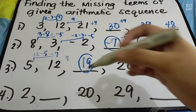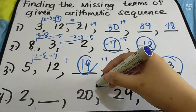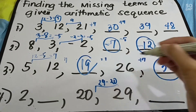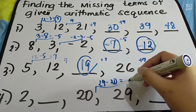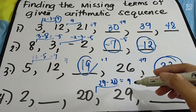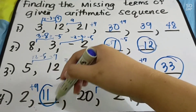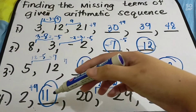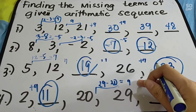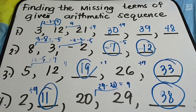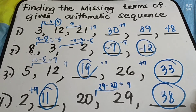Number 4: since there are no adjacent given terms at the start, we use the two adjacent known terms to find the common difference. 29 minus 20 = 9, so d = 9. Now we work outward: 2 plus 9 = 11; 11 plus 9 = 20; 20 plus 9 = 29; 29 plus 9 = 38. That's how simple it is to find the missing terms of an arithmetic sequence.